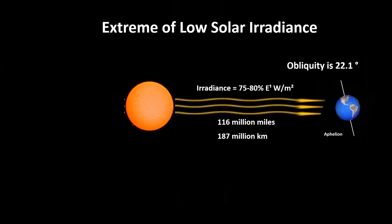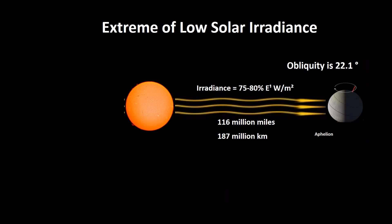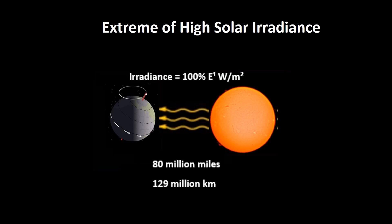Earlier we looked at the example of extreme low solar irradiance, where the aphelion is at its greatest distance and the actual tilt is closest to the vertical. When we factor in precession, there will be further variations in the seasons, and a further extreme as the cycles of precession and obliquity coincide. One extreme being where precession tilts the Earth even further from the Sun, and another being where precession tilts the Earth closer to the Sun.